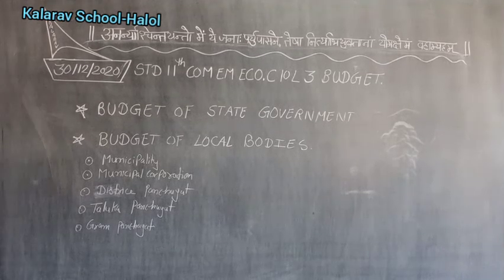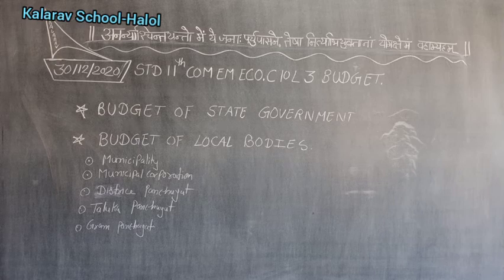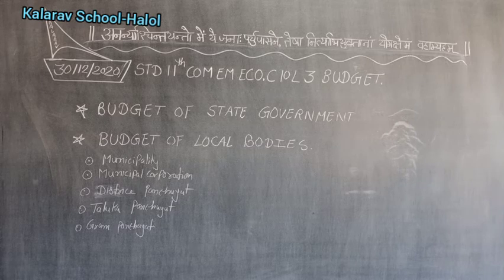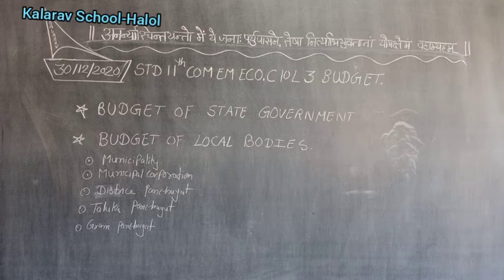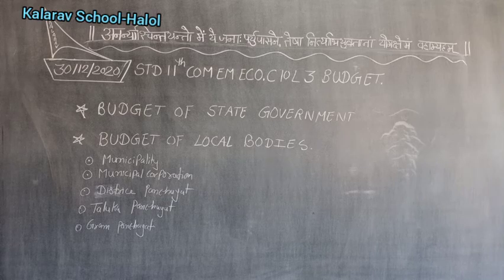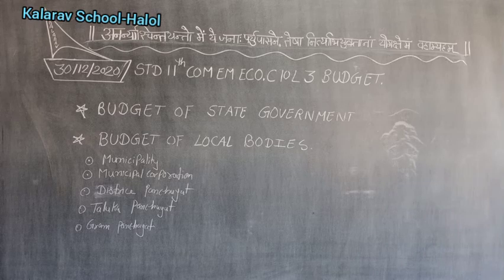Now let's talk about the budget of the state government. First, let's see what are the income sources from which the state obtains income. The first one is the state's share from the tax revenue of the central government, received upon the recommendation of the Finance Commission. Whatever money is given by the central government in the form of revenue or taxes collected — especially the GST share — that is received by the state government.